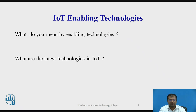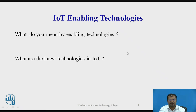What do you mean by enabling technologies? This is nothing but any equipment or methodology that alone or in combination with associated technologies is going to increase the performance of the internet of things. That is why we say those are enabling technologies.